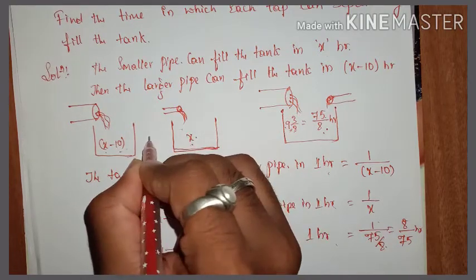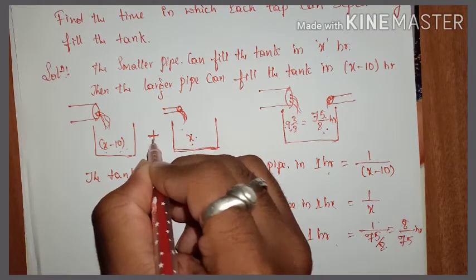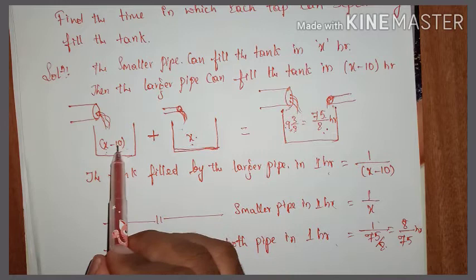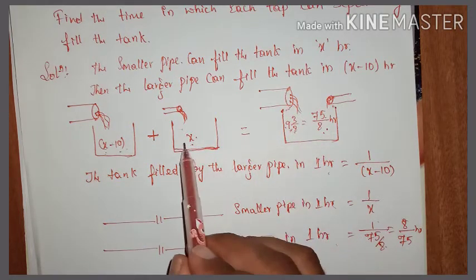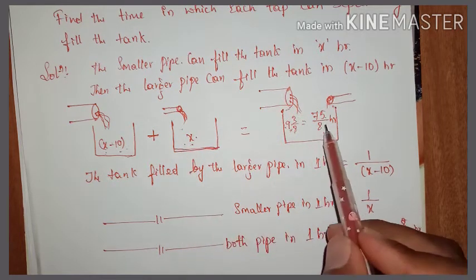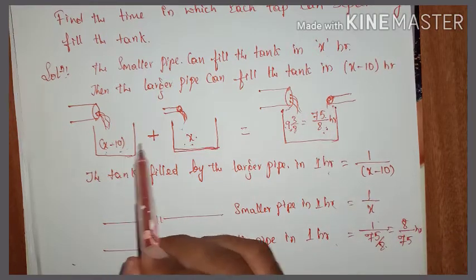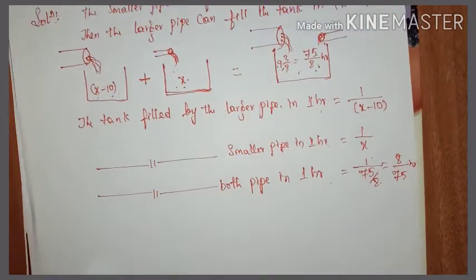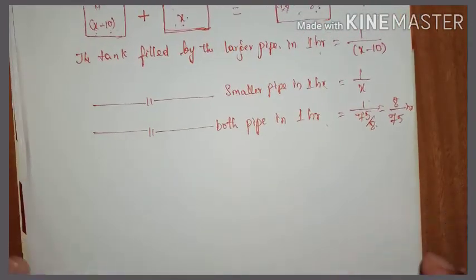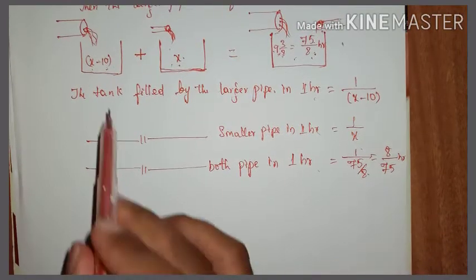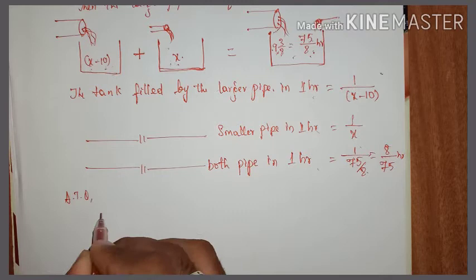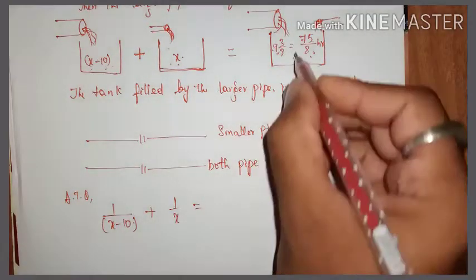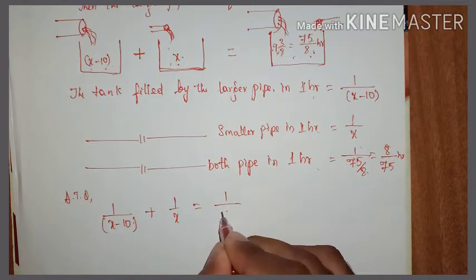Now observe: the larger pipe fills 1/(x-10) per hour, the smaller pipe fills 1/x per hour. If I add these two amounts, I get the total filled by both pipes together for one hour. So for one hour, according to the question: 1/(x-10) + 1/x = 8/75.